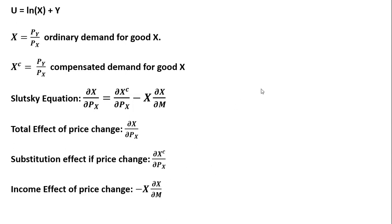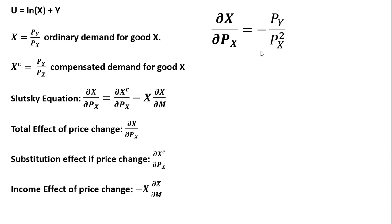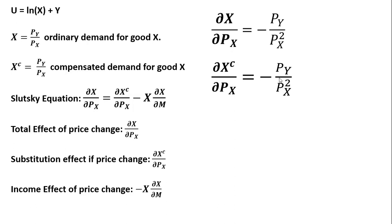Showing those results on the right: the total effect of a price change on good x is the partial derivative of ordinary demand with respect to the price of good x, which following the quotient rule gives us the corresponding expression. To get the substitution effect, we take the partial derivative of the compensated demand for good x with respect to the price of good x. Notice that the substitution effect equals the total effect, which can only be possible if the income effect is zero.